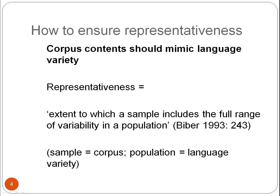For example, let's say the language variety is Australian news reports. First of all, we'd look at how many Australian newspapers there are, looking at the variability in the language variety, and then we might decide to include an equal number of words from each newspaper in our corpus, so that the corpus mimics this variability and is representative.